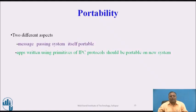Portability has two different aspects. First, the message passing system itself is portable — meaning a new IPC facility on another system can be constructed using the basic design of an existing IPC. Second, applications written using the primitives of an IPC protocol should be portable to a new system, which requires handling heterogeneity through the use of an external data representation format on computers of different architectures.